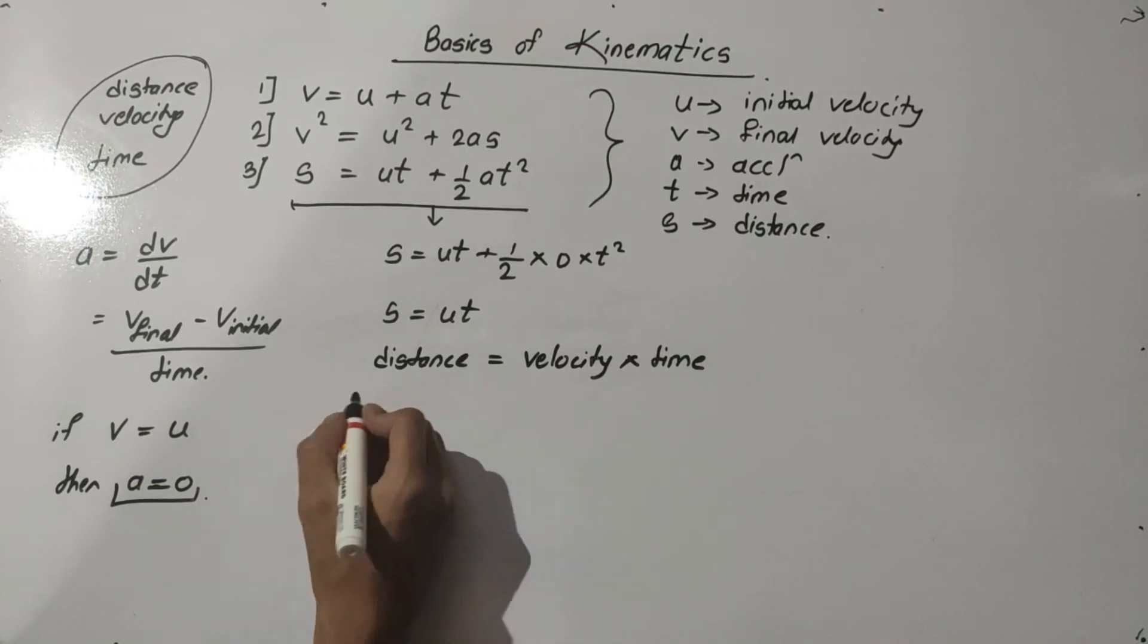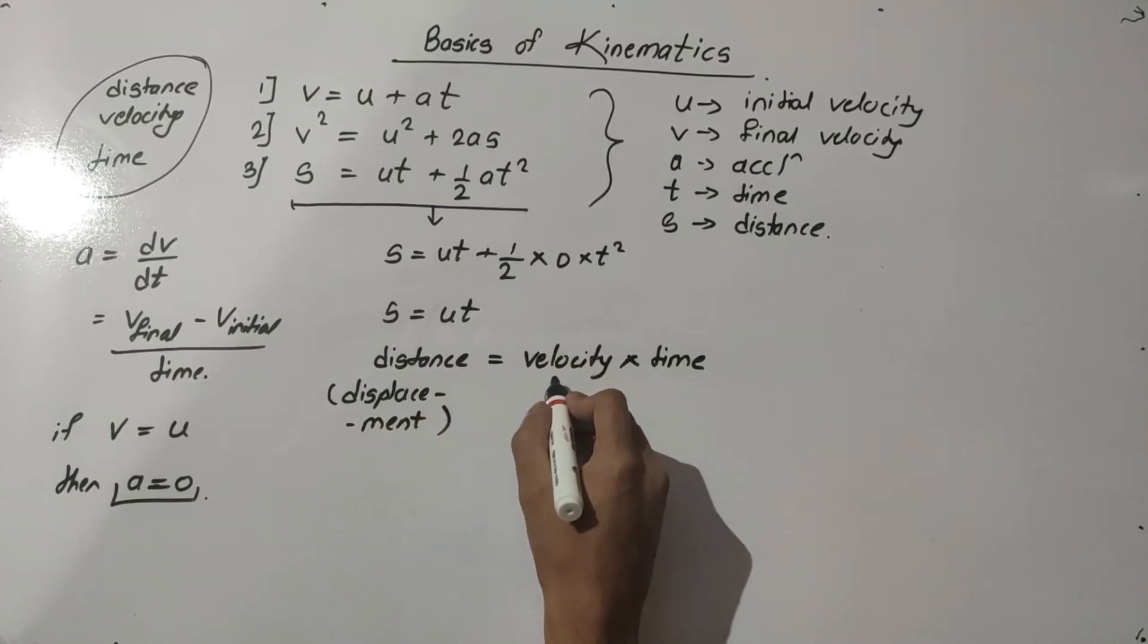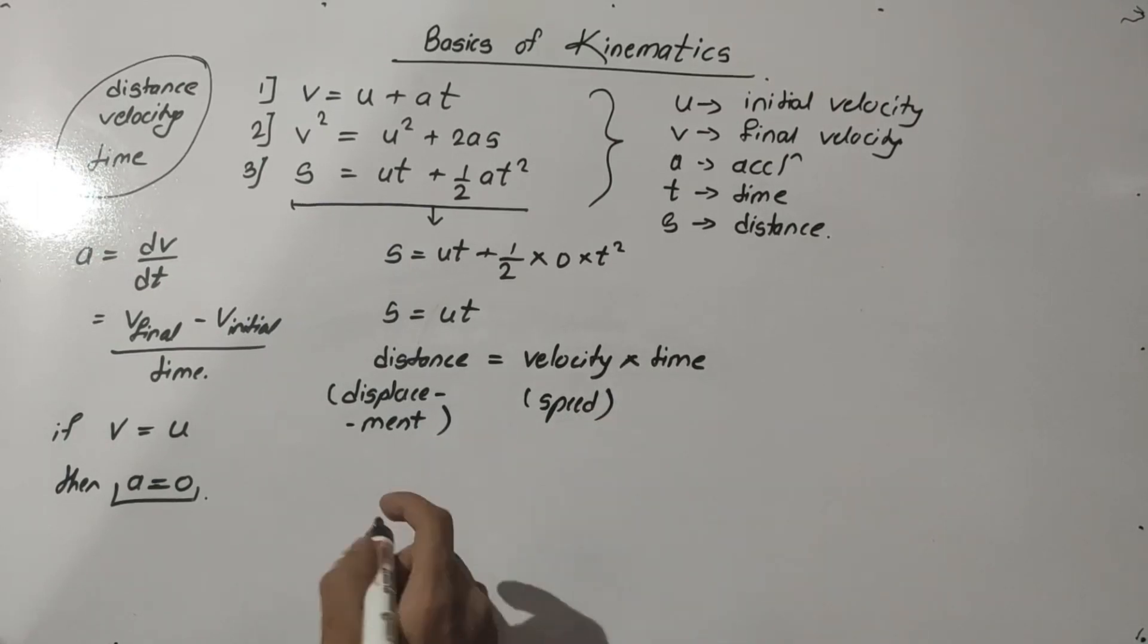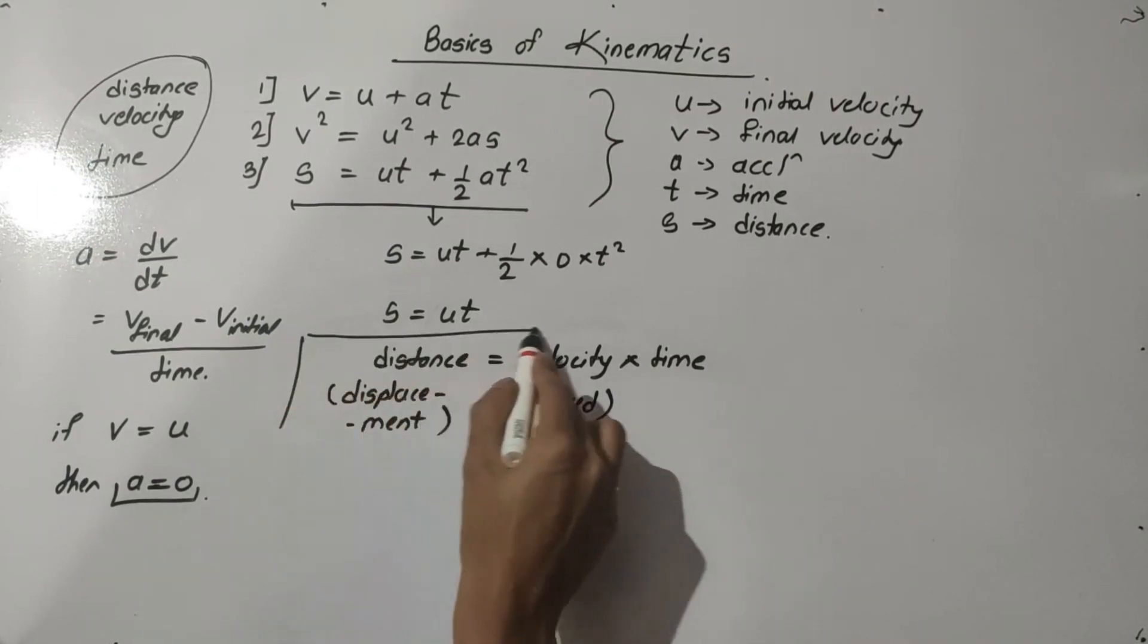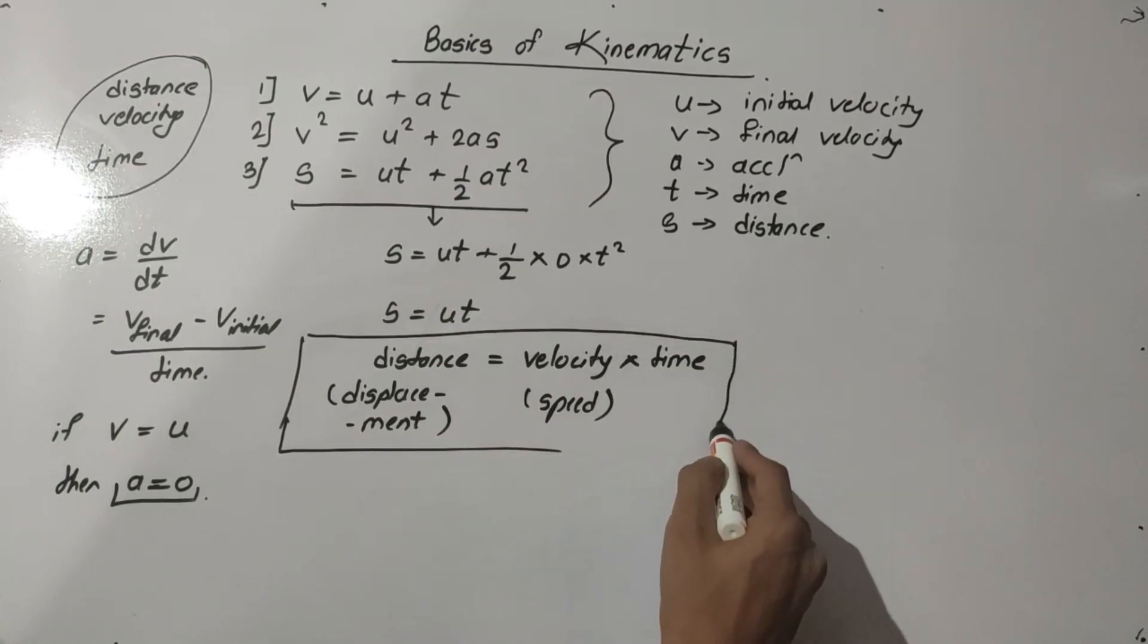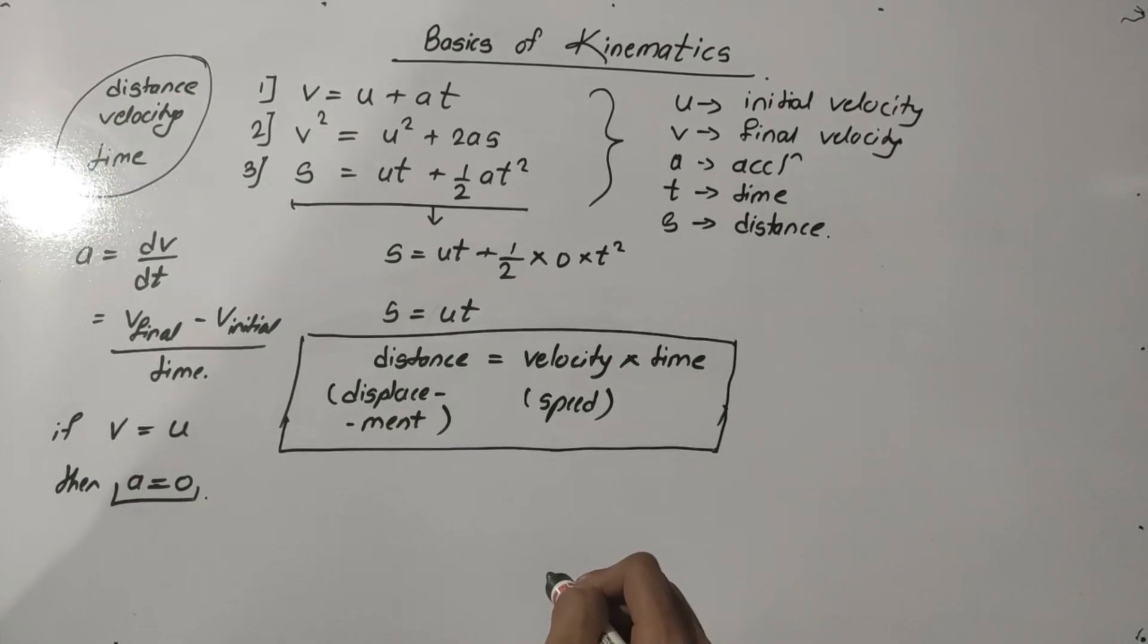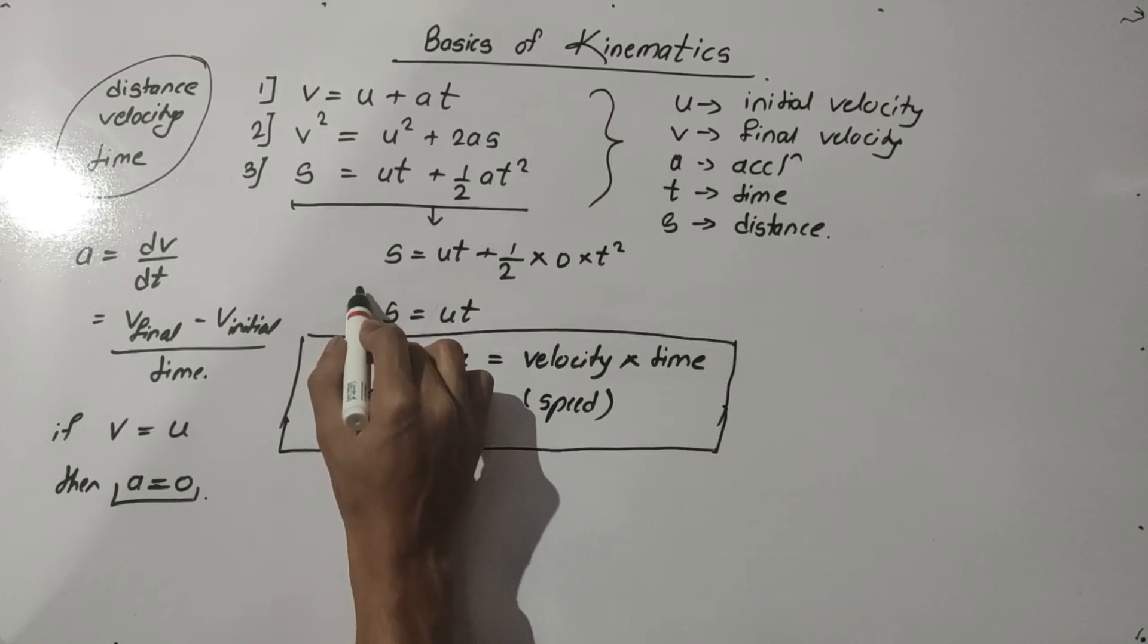Here we may say the distance as displacement also, and velocity as speed also, because here we are dealing with problems in only one direction. So distance and displacement are one and the same. Let us discuss some questions related with the formula S equals UT.